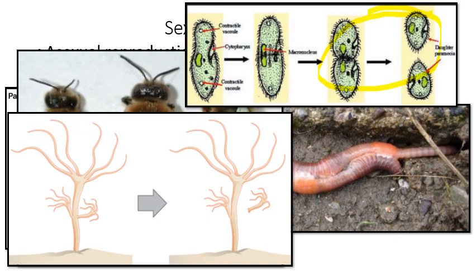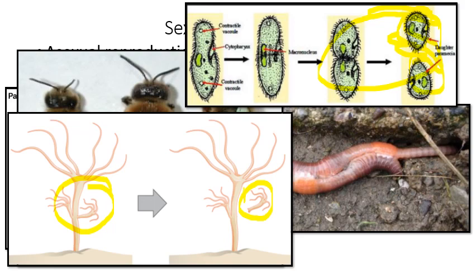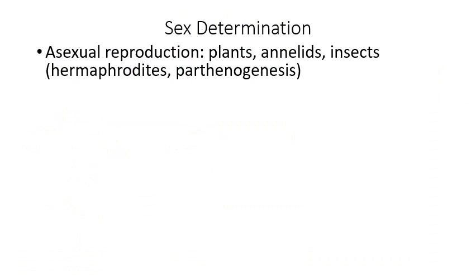Some primitive organisms like the paramecium — a ciliate protozoan — simply divide through binary fission, creating two identical daughter cells, which is very slow evolutionarily. A sea anemone, belonging to phylum Cnidaria, reproduces through budding — producing small offshoots that break off and grow into full-sized sea anemones. Starfish also reproduce through budding: an arm can break off and grow into a new starfish.